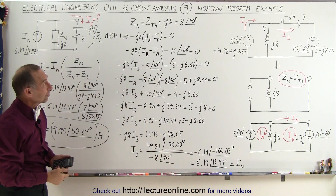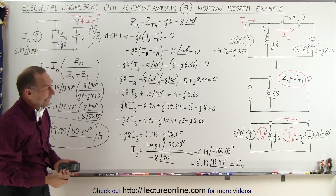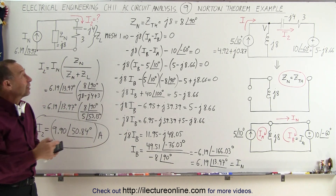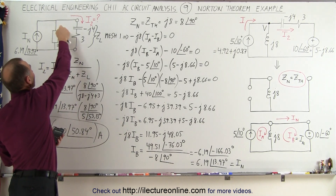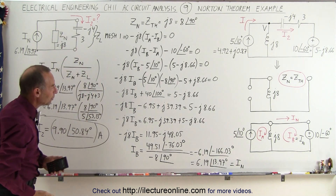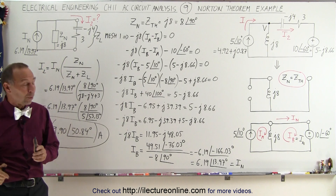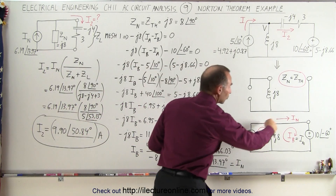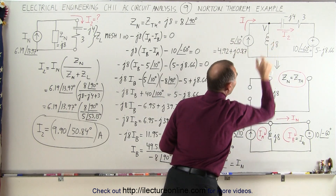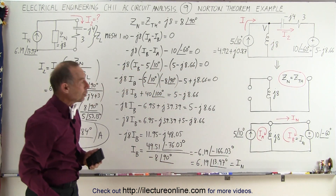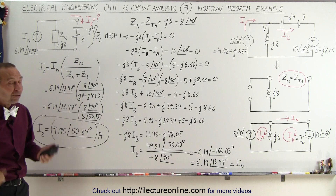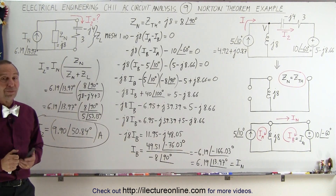So there's our sixth method — the Norton Theorem method. I don't like it quite as much as the Thevenin method, because the Thevenin method uses a series equivalent circuit while Norton uses a parallel equivalent. It may be a little bit more complicated, and it's more work to find the current to the short between the two terminals when the short replaces the load impedance. But it's a very valid method, and in some cases it's also one of the easier methods to use.